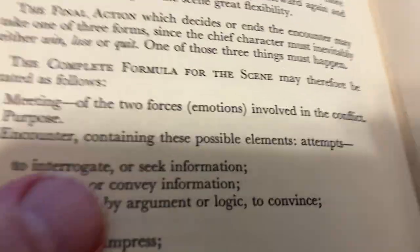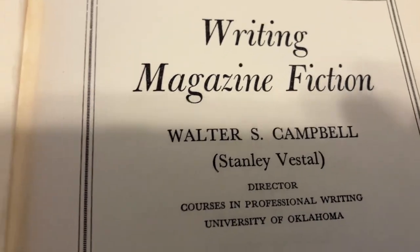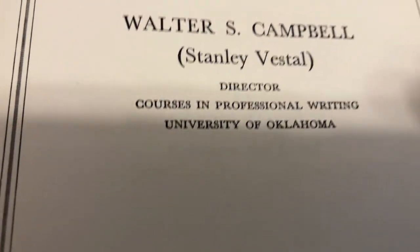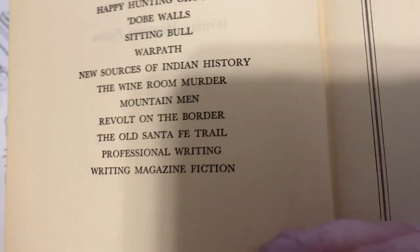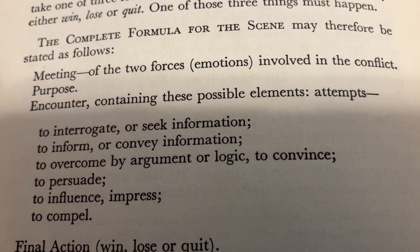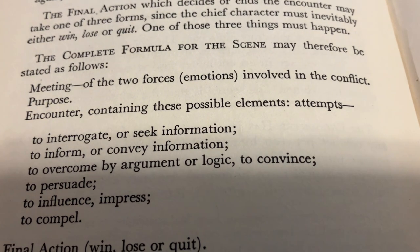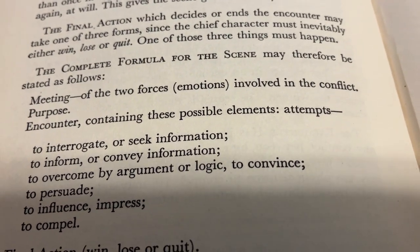Here is Campbell's book, The Complete Formula for the Scene — a 1940 book, Writing Magazine Fiction, by Walter S. Campbell, director of courses in professional writing at the University of Oklahoma, published 1940 by Doubleday. On page 44: 'Complete formula for the scene — meeting of the two forces involved in the conflict, their purpose, encounter containing these possible elements.'